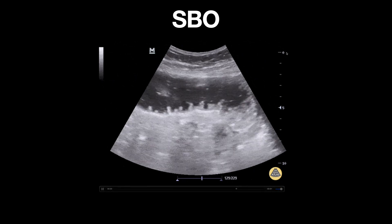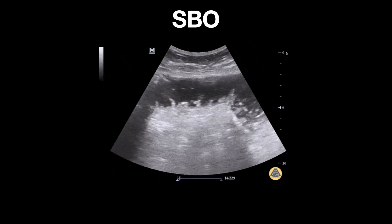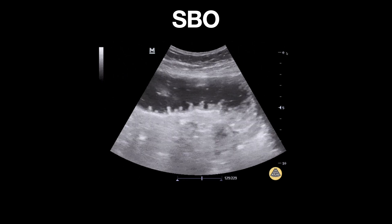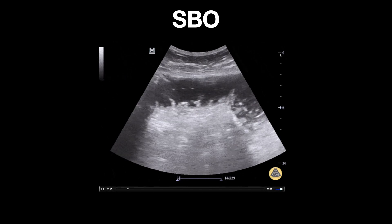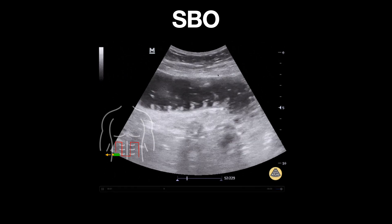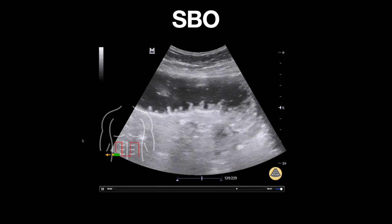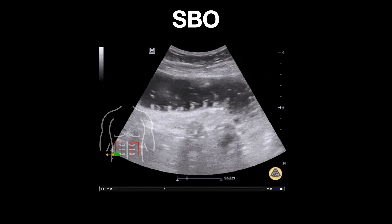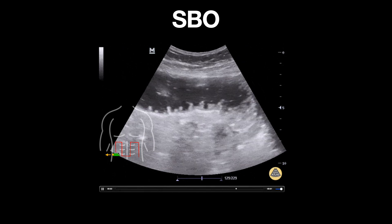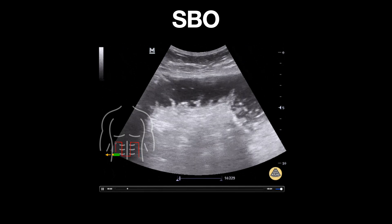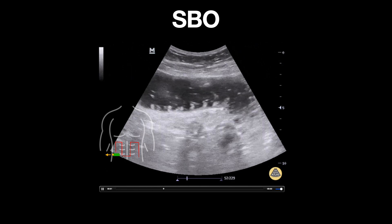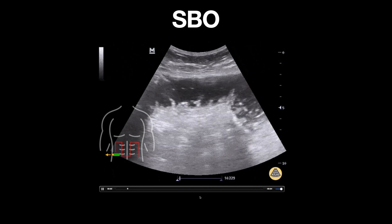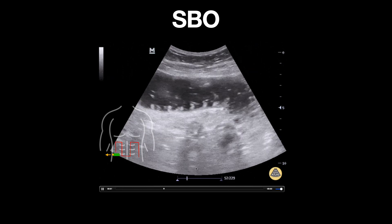This is an ultrasound clip demonstrating findings of a small bowel obstruction. A curvilinear probe is used and placed over the abdominal wall. Generally, when performing this examination, the probe can be placed in a transverse orientation and moved in a lawn mower-like, organized fashion across the abdominal wall, evaluating for dilated loops of bowel.